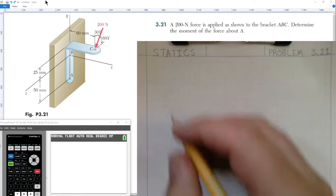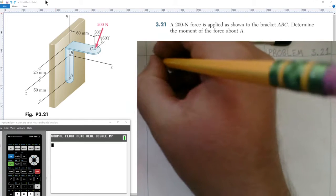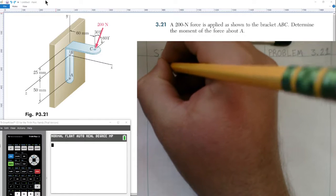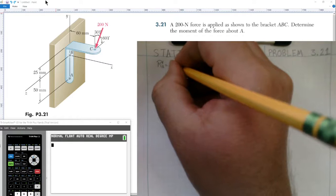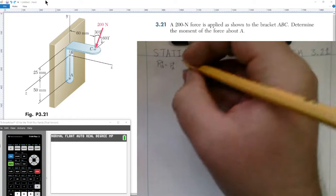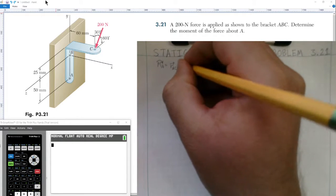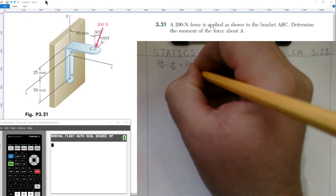First I'm going to write my equation out. I know the moment about A is equal to the position vector from A to where the force is being applied at point C, crossed with the force at point C.